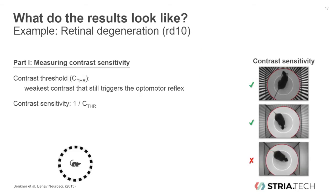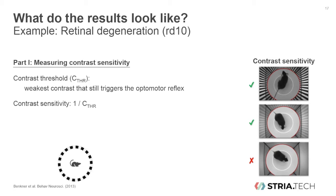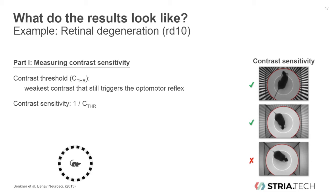RD10 mice are a widely used model for the disease retinitis pigmentosa. When measuring contrast sensitivity, the so-called contrast threshold is the weakest contrast that still triggers the optomotor reflex, as illustrated in the photos on the right. Contrast sensitivity is then defined as the inverse of the contrast threshold — larger values mean that the mouse can see better.